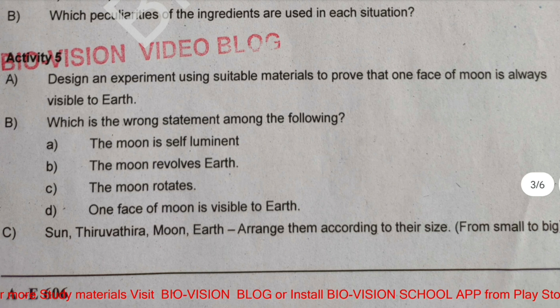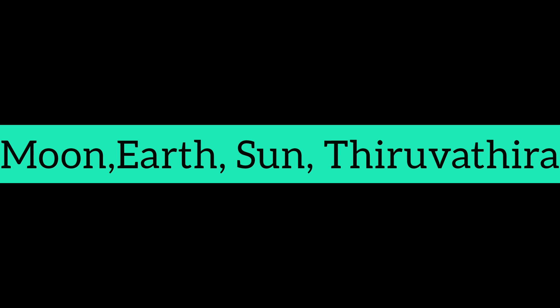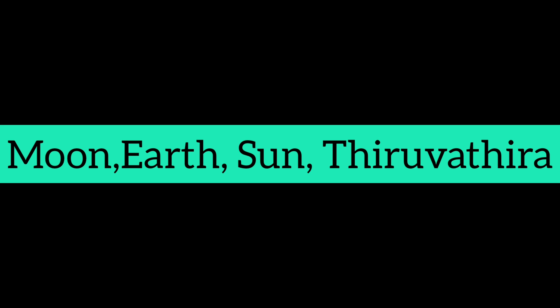Question number C. Arrange Sun, Thiruwaadura, Moon, and Earth according to their size from small to big. The answer is: Moon, Earth, Sun, and Thiruwaadura.